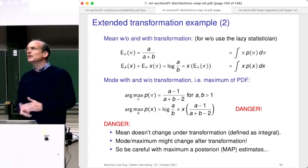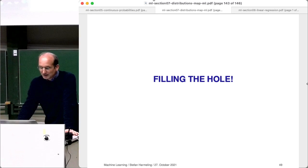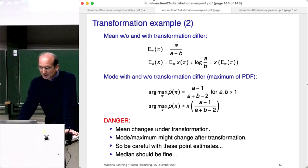Actually, what I just said in the lecture is slightly wrong. Here is a corrected slide. One cannot show that E[x] equals x of E[pi]. The right-hand side is log(a/b), but that is not the same as E[x]. The expectation of x can be computed using the digamma function. The conclusion I drew earlier — that the mean will not change with the transformation — is wrong. This is an example where both the mean and the mode will change after transforming the distribution.